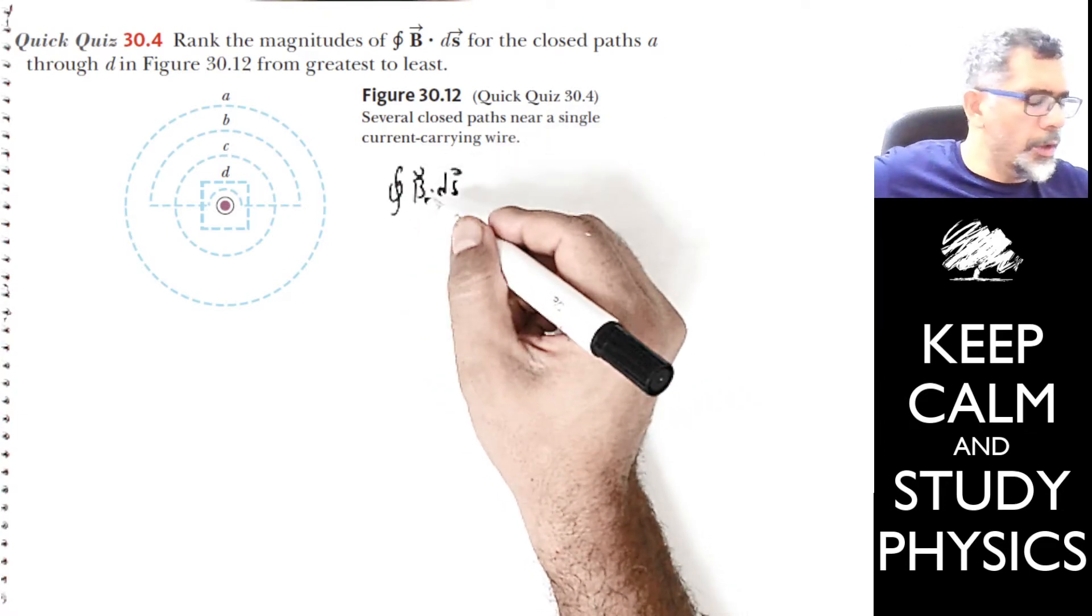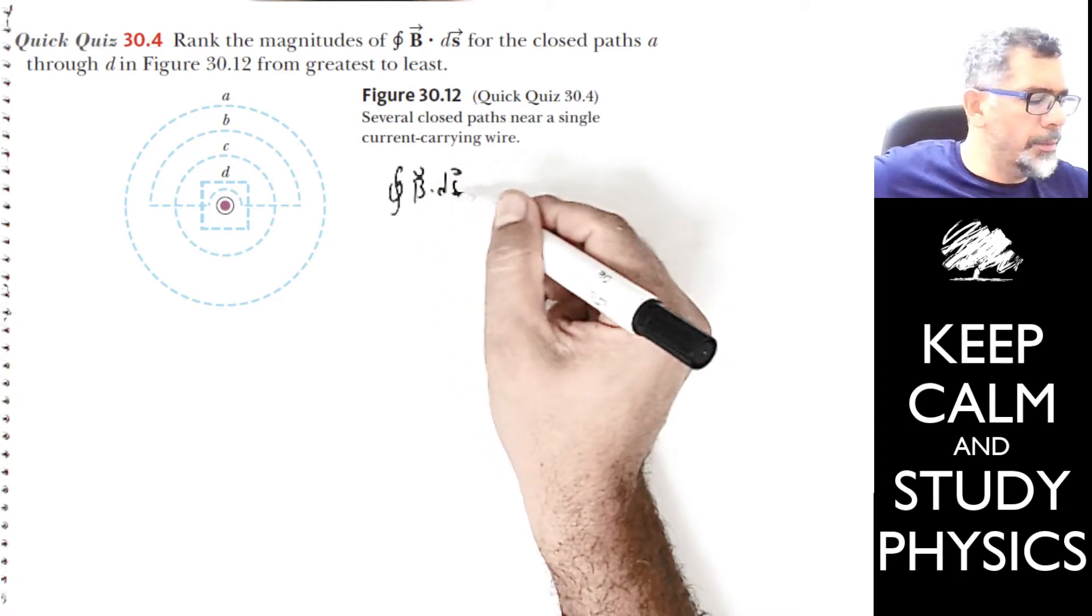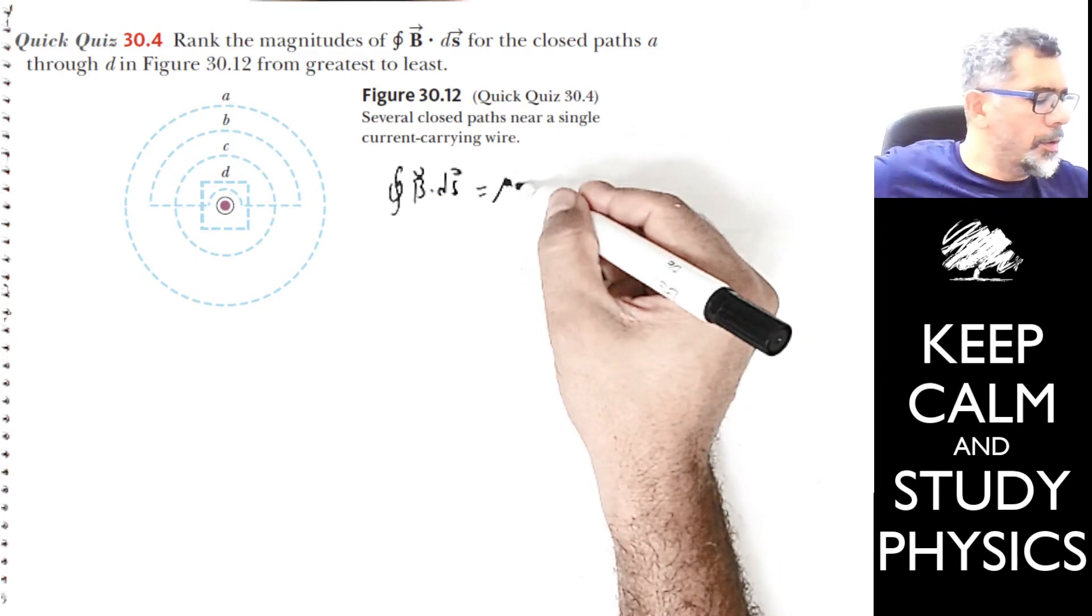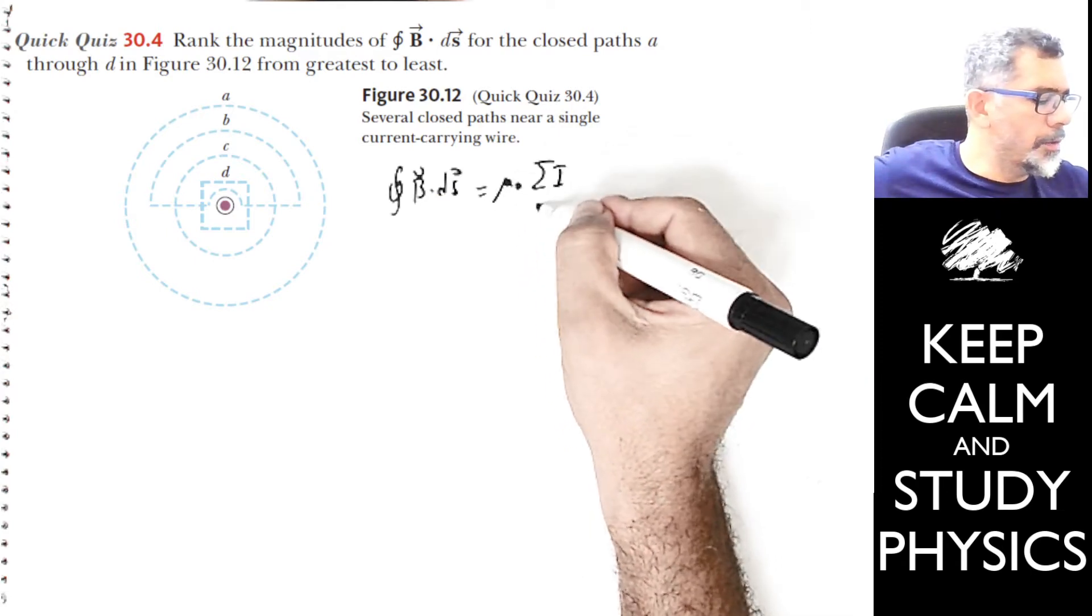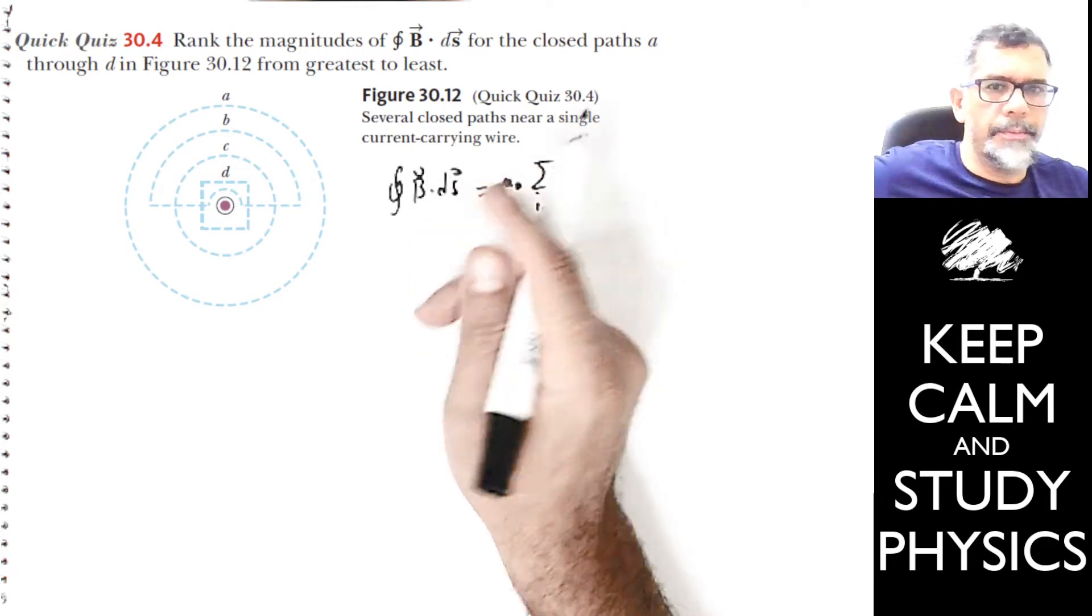If you calculate this path integral along a closed path, B·dS, it is just mu₀ times the sum of all currents enclosed by the closed path.